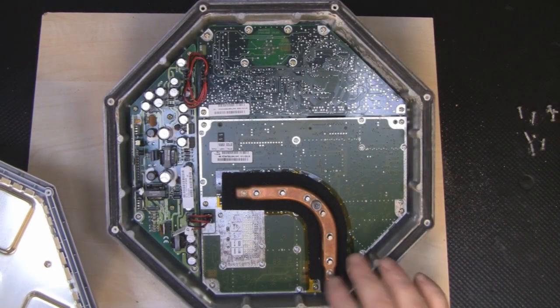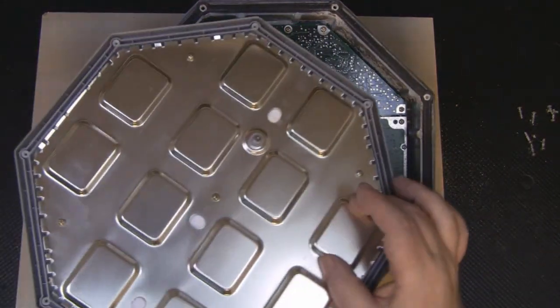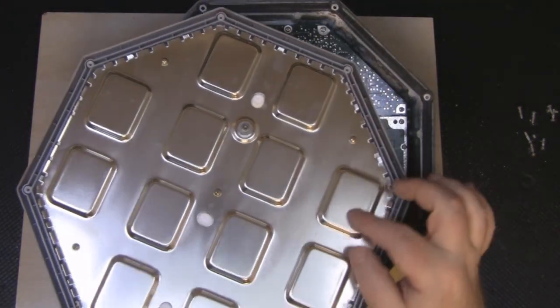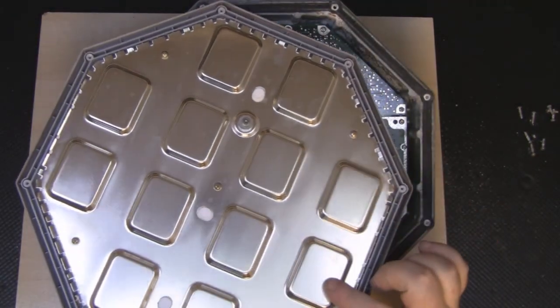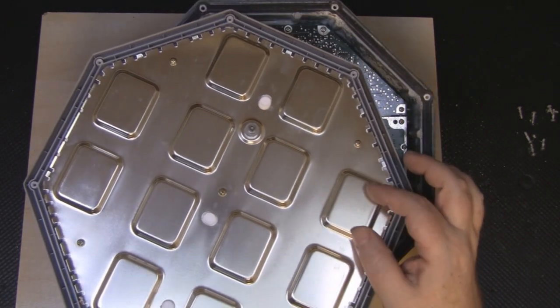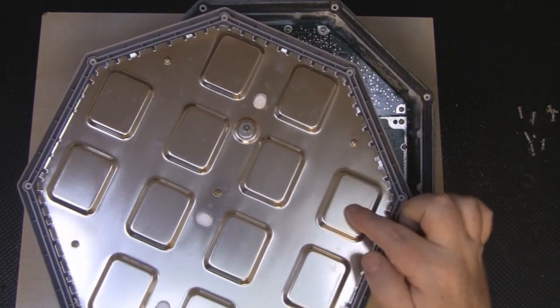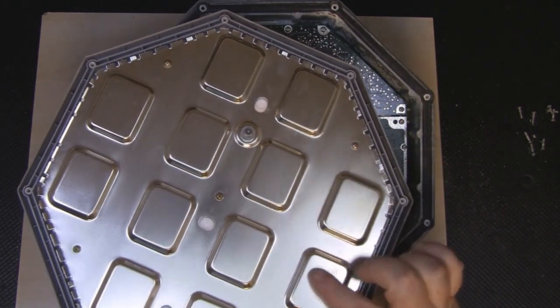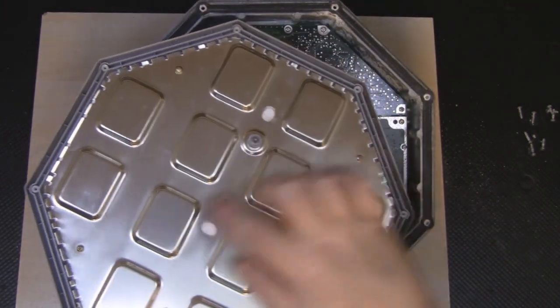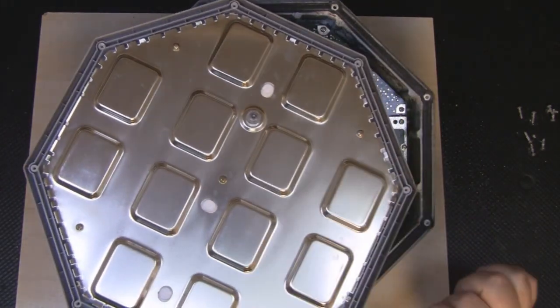Now that I've got the lid off what we've actually got here is one big giant patch antenna. Underneath these little rectangle indentations in the metal here I'm guessing that we're going to see some traces and some little funky connections joining all these up as one big array if you like.